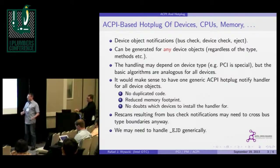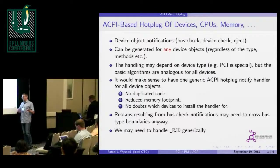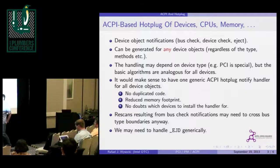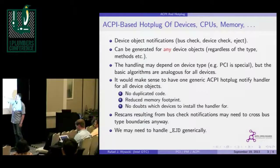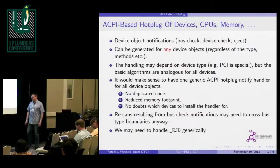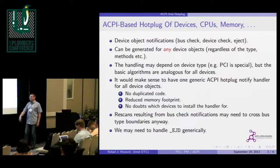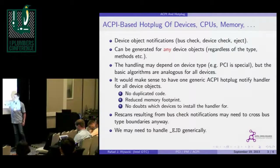The PCI host bridge hot plug duplicates some code already in the ACPI core, so we could easily merge those things. PCI ACPI PHP duplicates the same code, so we can merge that again. We can get rid of some data structures we use right now. And if there's one handler for everything, then we don't have the problem of choosing which devices we register the handler for. Also, if we have a bus check notification for a device high in the hierarchy, we need to scan everything top-down from there, which may cross bus type boundaries.